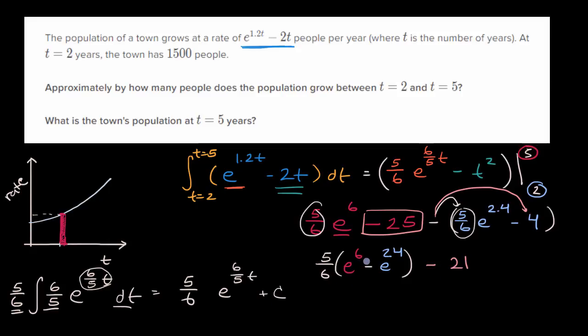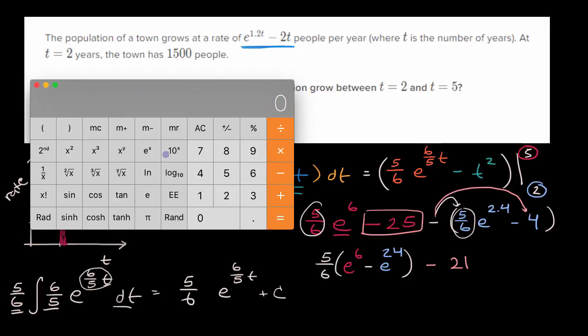And I would need a calculator to figure this out, so let me do that. Let me get my calculator on this computer. If we want to find e to the sixth power, that's 430... so minus e to the 2.4 power, I get equals, so what's in parentheses is this number right here. So times five-sixth, times five, divided by six, is equal to that, minus twenty-one is equal to this. So if I round to the nearest hundredth, it's going to be approximately 306.00.